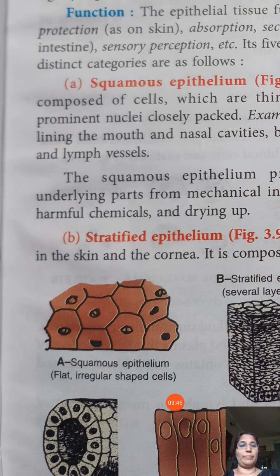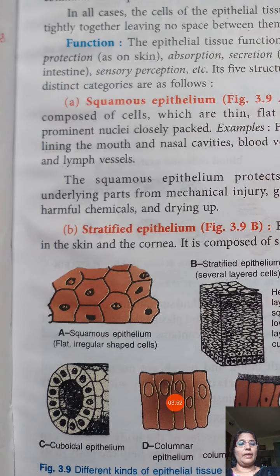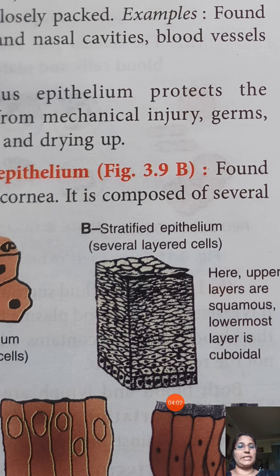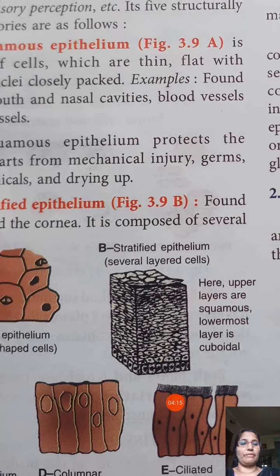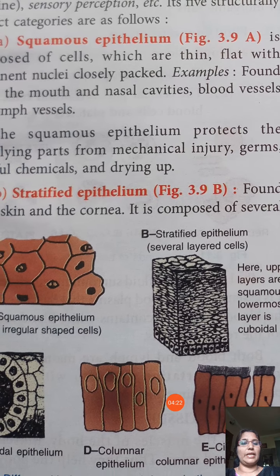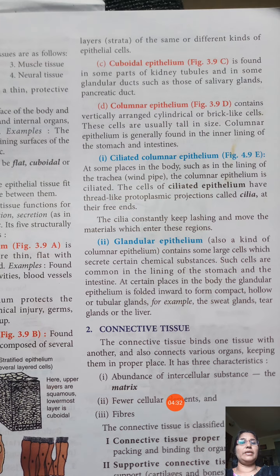Stratified epithelium is found in the skin and cornea. Several layers of cells are present. In our skin, after two or three days, dead cells are removed from the surface — this is because our skin is made of stratified epithelial cells. New cells are produced from the lower side to replace them.